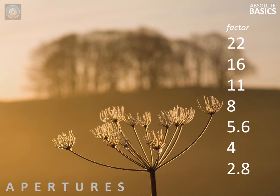Shutter speeds and apertures do more than produce a correctly exposed image. We have seen how shutter speeds blur movement. Apertures also control depth of field — that is, sharpness of an image from front to back. This is another shot that is difficult for a camera on auto or with a smartphone. Making the trees unsharp ensures that the cow parsley stands out from the background. These two images are photographs, not snaps.